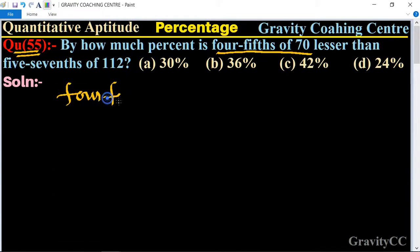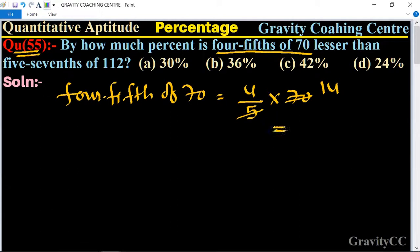Four-fifths of 70 is equal to 4/5 × 70. So 14, 7 into 14, 5 into 70, and 14 × 4 is 56.